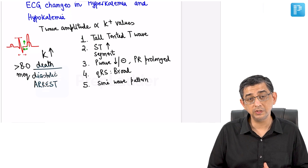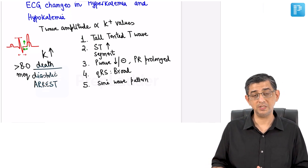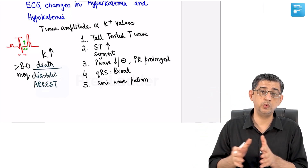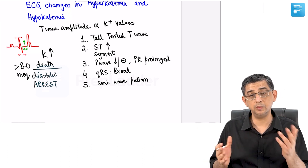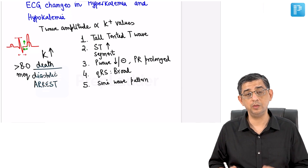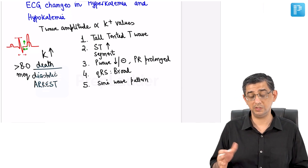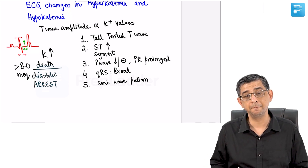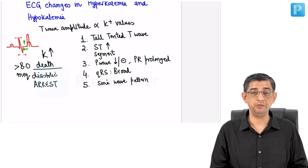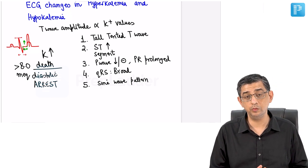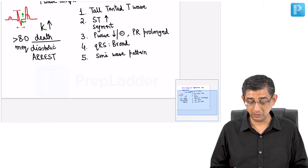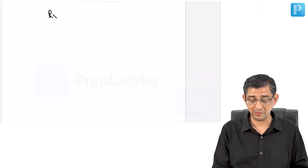To summarize the ECG findings of hyperkalemia: T wave height is increasing, ST segment is going up, QRS is broadening, PR interval is prolonging, and the P wave is disappearing. These key points will allow you to solve exam questions on hyperkalemia ECG findings. The three conditions where P waves can be absent are atrial fibrillation, sick sinus syndrome, and hyperkalemia.